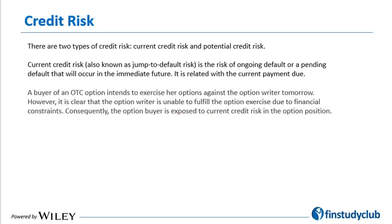There are two types of credit risk: current credit risk and potential credit risk. Current credit risk, also known as the jump-to-default risk, is the risk of ongoing default or a pending default that will occur in the immediate future. We associate current credit risk with the current payments.